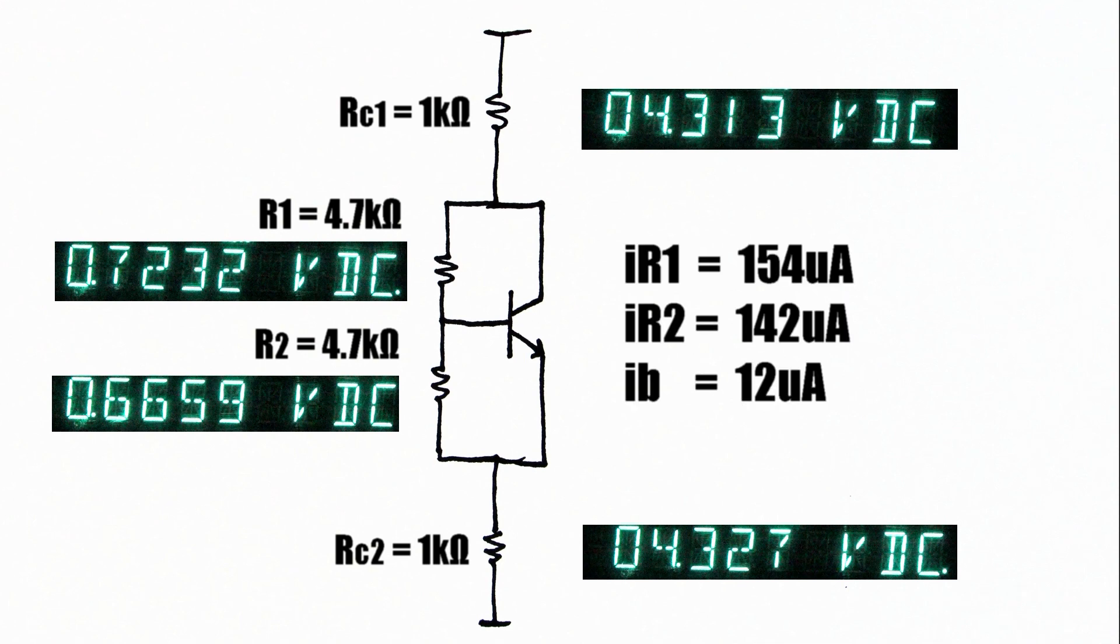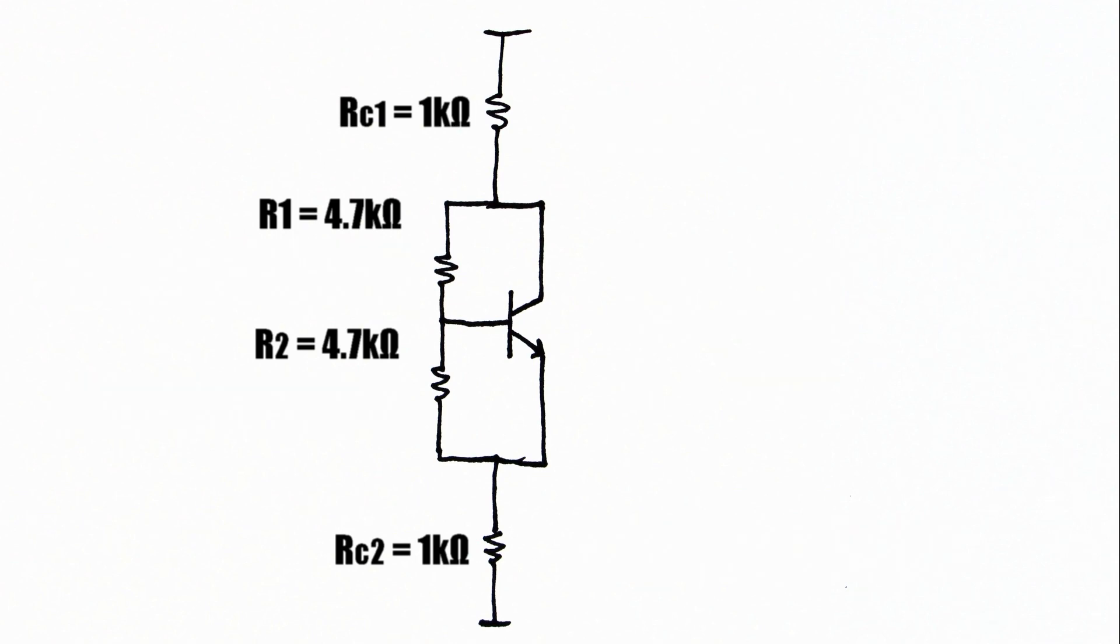Here are the actual currents going through R1, R2, and into the base of the MPN transistor. We don't violate the rule that there's 10 times as much current going through R2 as there is going into the base of the transistor.